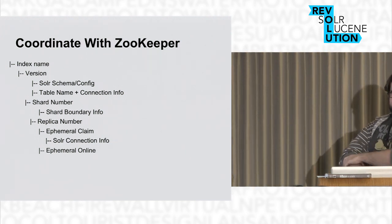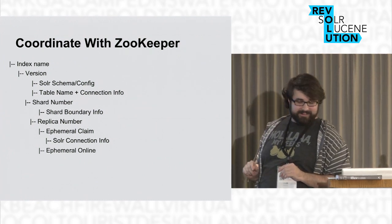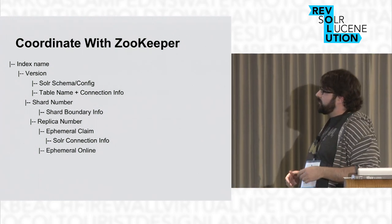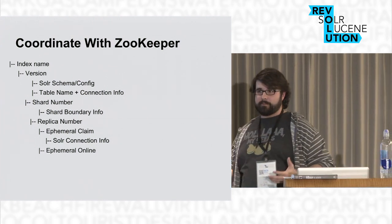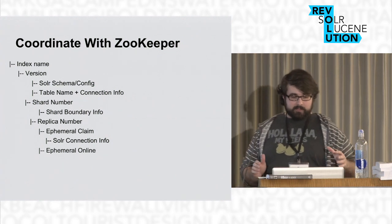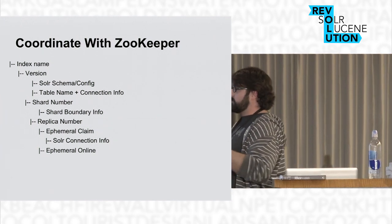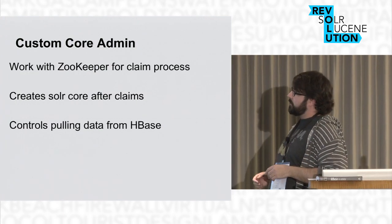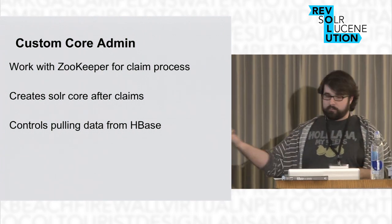For coordination, we turned to ZooKeeper. We built a structure with the index name, a version of the index, and then attached things like table name, connection info, the schema and config for Solr instances, shard boundaries on top of HBase, replica numbers, and ephemeral nodes for the real connection processes. When something claims a shard, it creates an ephemeral node saying where to connect. We also wrote a custom core admin that works with ZooKeeper for the claim process and pulls data from HBase.